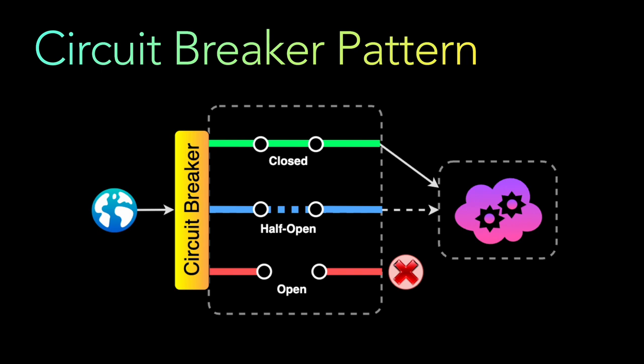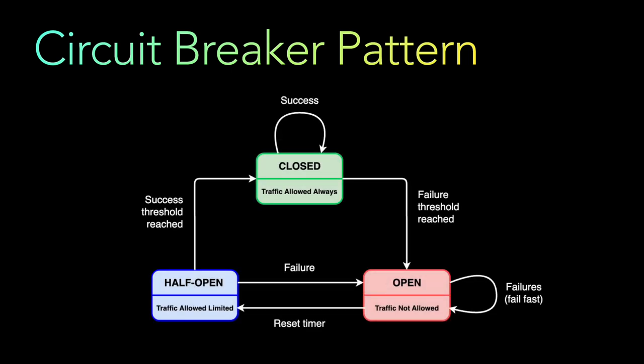However, if failure continues from the half-open state, then it again goes back to the open state, rejecting all requests. So the half-open state is in between — it decides whether to completely open or completely close the network. This cycle continues, making it a kind of state machine between the three states.